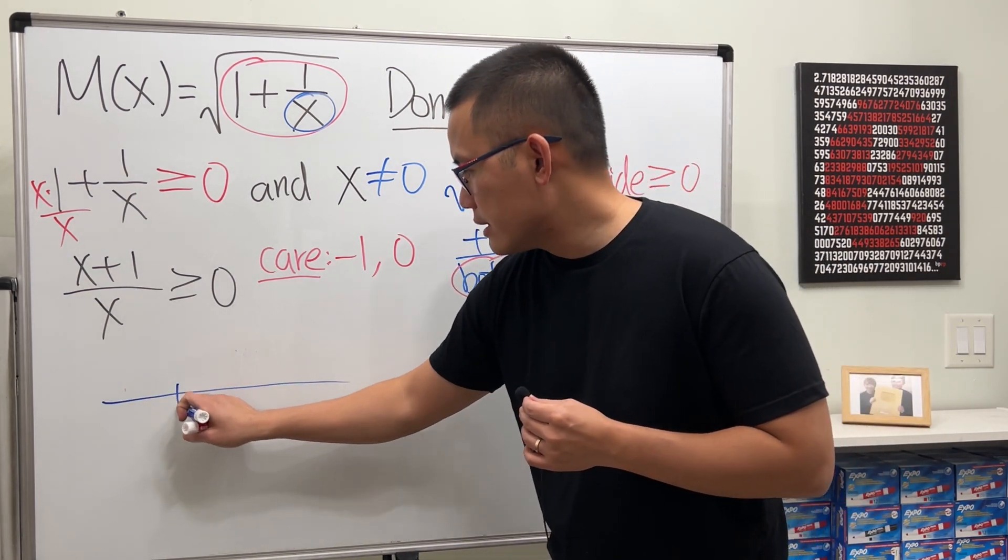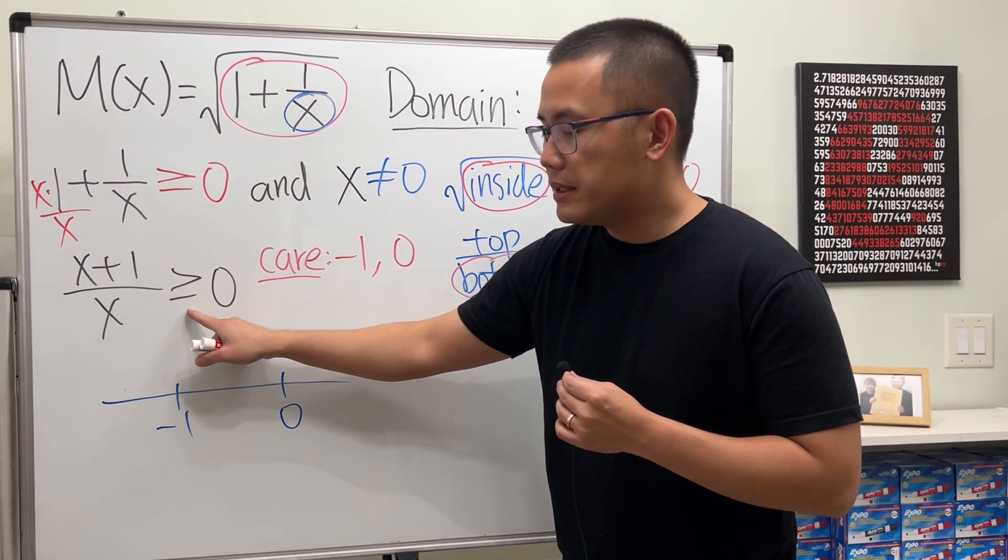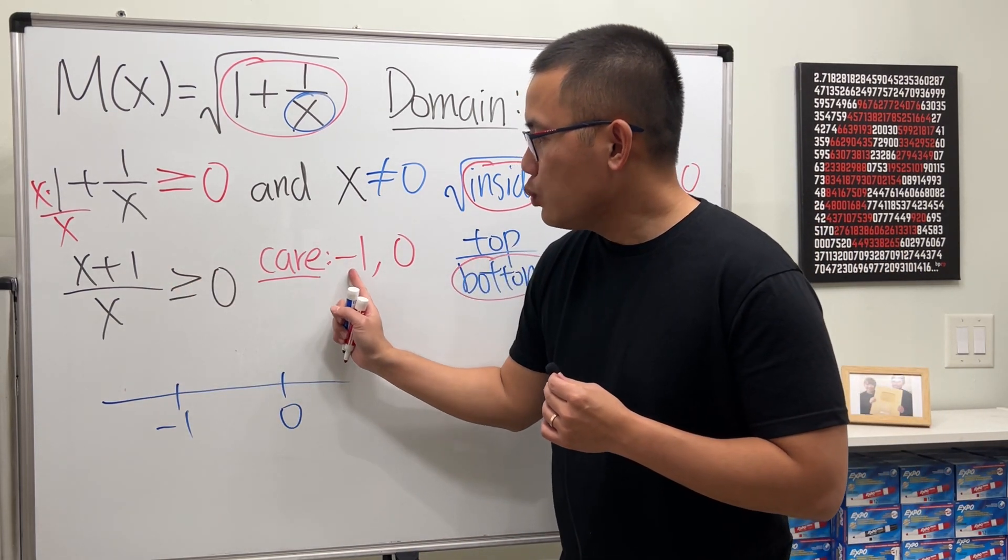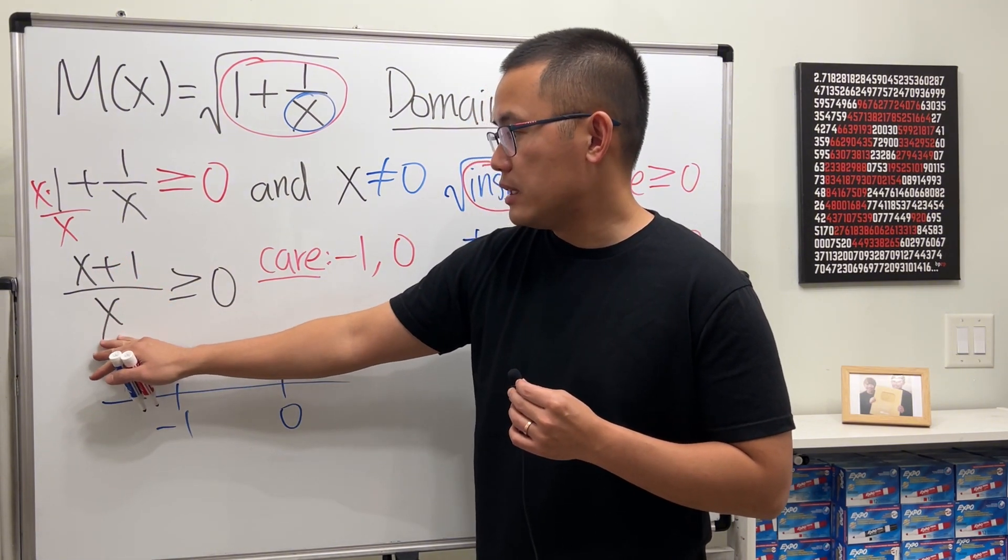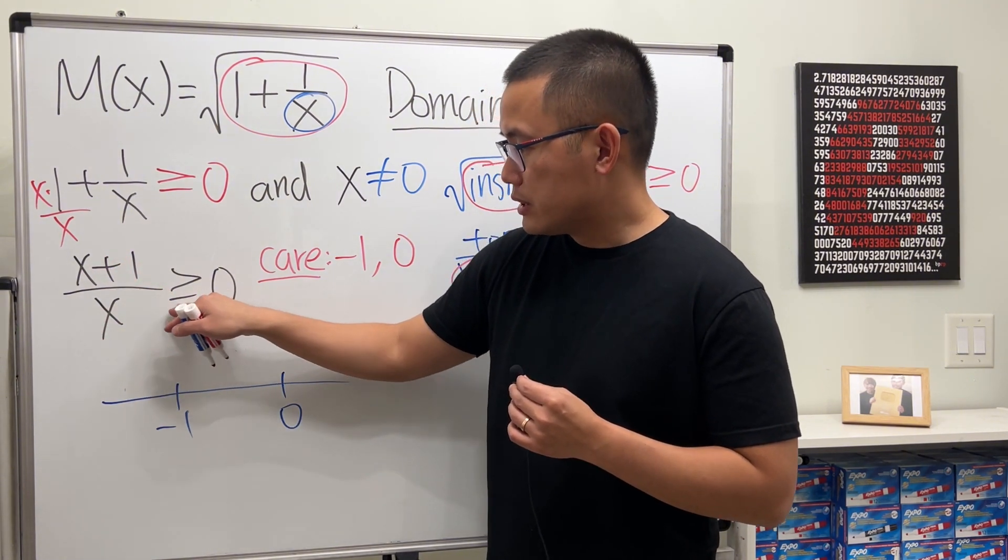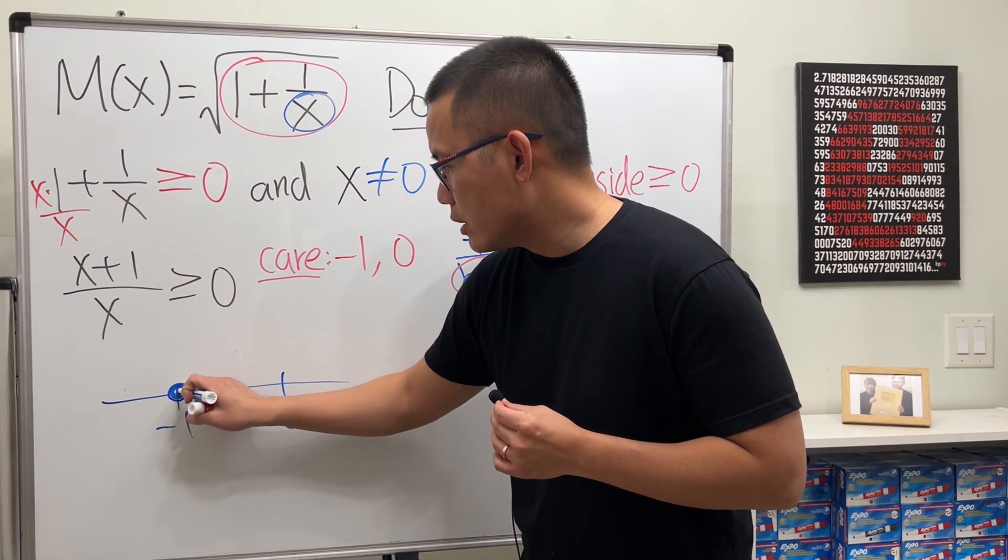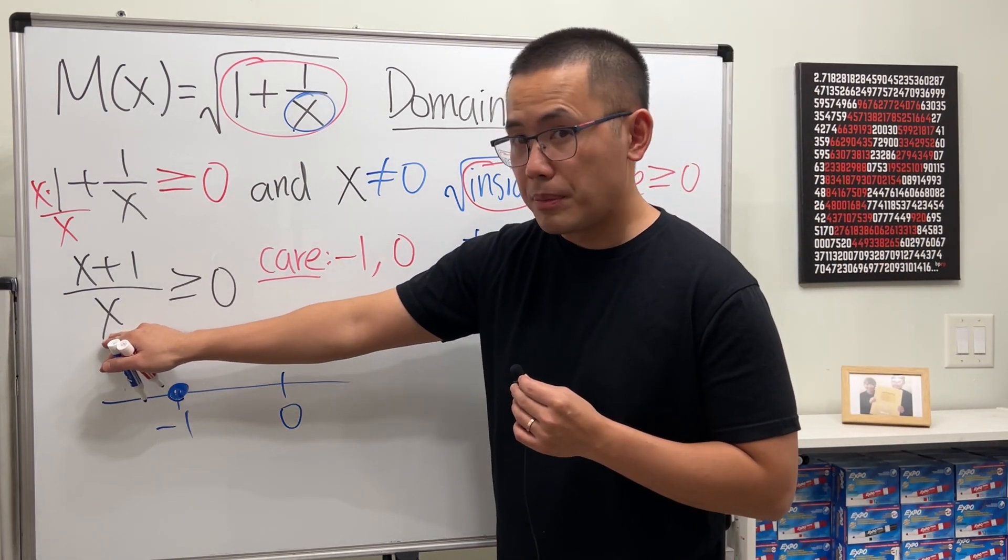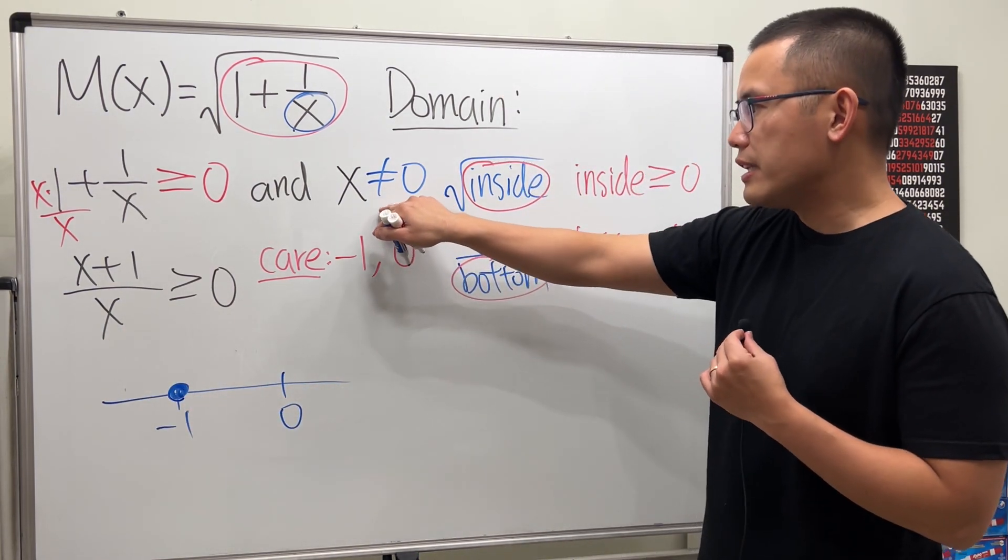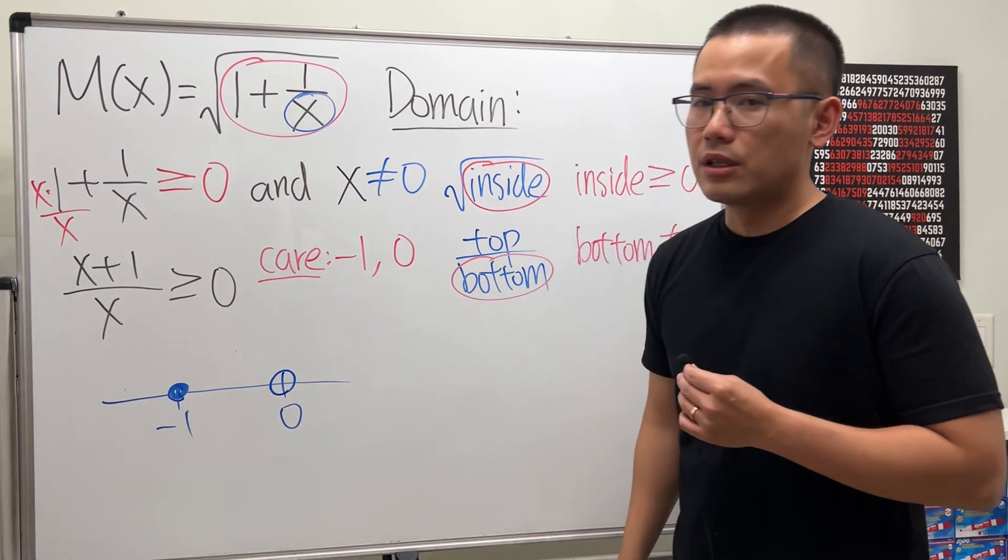Here is negative 1. And here it's equal to 0. And because we have inequalities, the negative 1 will make the top equal to 0, and the bottom is going to be negative 1. It's equal to 0. That's okay. So for negative 1, we will have to include the number. But for 0, because that's on the bottom, and right here we also say that x cannot be equal to 0, so make sure we have an open circle.